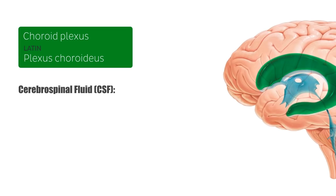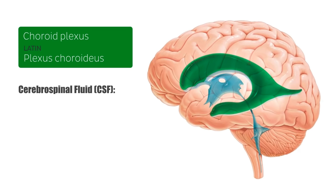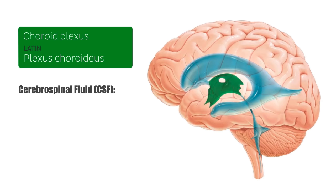Once the cerebrospinal fluid is secreted into the lateral ventricle, it travels through the interventricular foramen — which just appeared on screen in green — and through the interventricular foramen it travels into the third ventricle, and then through the cerebral aqueduct into the fourth ventricle.